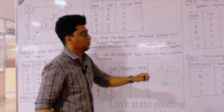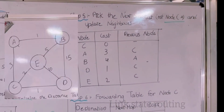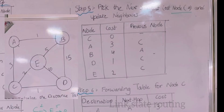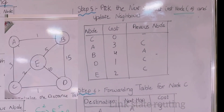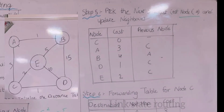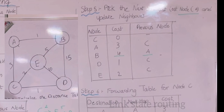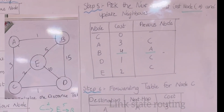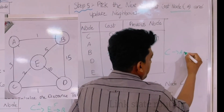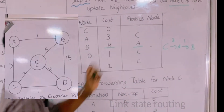Now we have to check the last neighbor also — the next directly connected neighbor of C, which is A, with a cost of 3. From A, we identify whether we can reach B at a lower cost. Moving via node A, we reach B with a distance of 3 plus 1, which is 4. Moving through A gives a cost of 4, which is much better than going through E, which gives 7. So C to A to B has a total cost of 4.